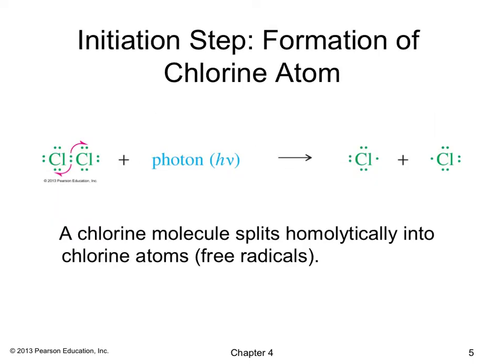Looking at the mechanism in detail, the first step — initiation — involves taking chlorine in the presence of light to generate two molecules of chlorine radicals. Each chlorine radical is denoted by a single electron. This splitting of diatomic chlorine is shown with half arrows, which is always used for free radical reactions, and indicates that you are homolytically splitting the chlorine atoms to form free radicals.